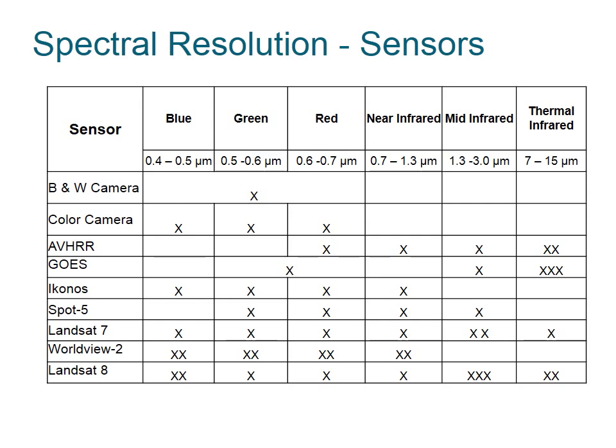Let's examine the spectral resolution for various remote sensing devices. This table shows the progress of technology as we increase spectral resolution over time. Starting off with the black and white camera, this device only recorded one band of information for the entire visible light spectrum. As the color camera was developed, it recorded separate information for the blue region, the green region, and the red region of the visible light spectrum — representing an increase in spectral resolution. Later on, film cameras were able to capture the near-infrared region, which was developed during World War II to detect camouflage on military vehicles.